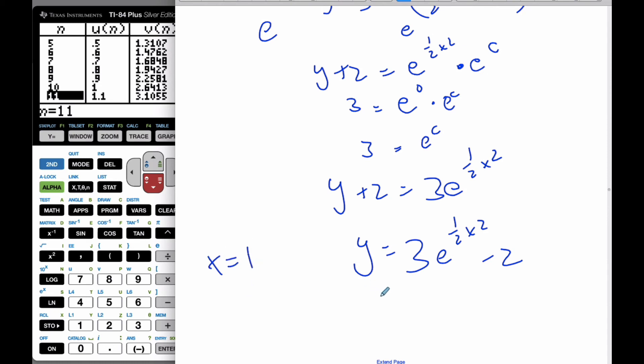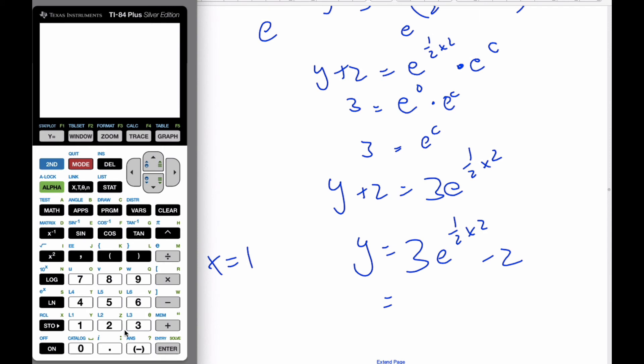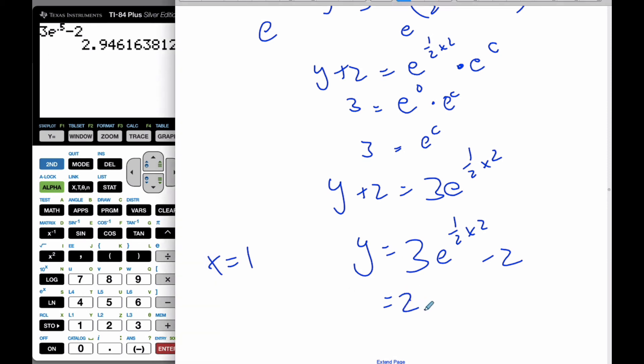And I'm looking for when x is equal to 1. So when I do that, if I go to my calculator, I get 3 e to the 0.5 times 1 squared minus 2. And I get 2.94616.